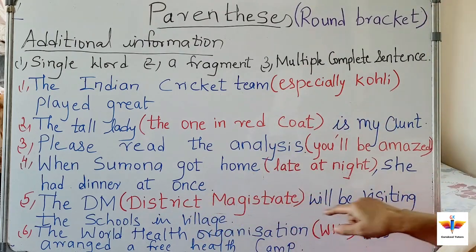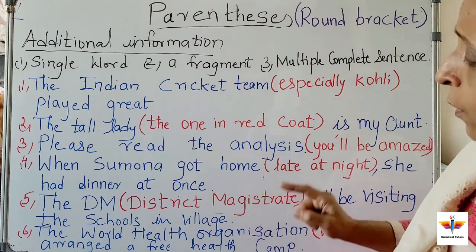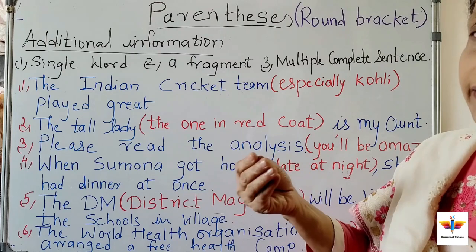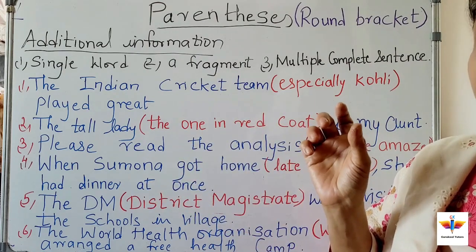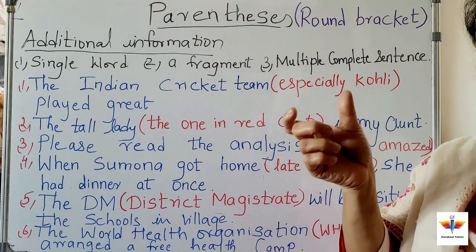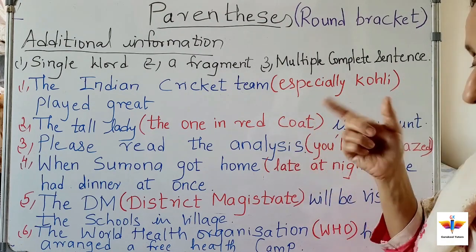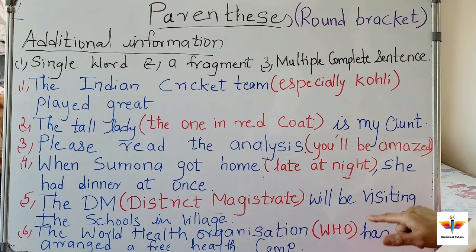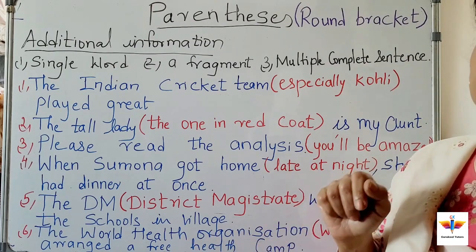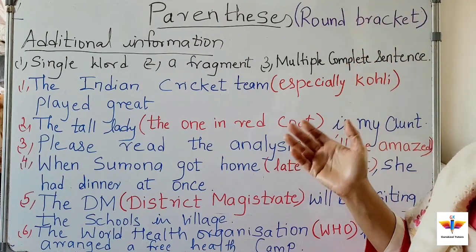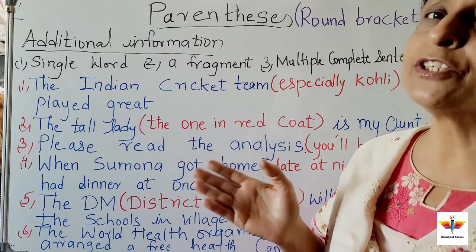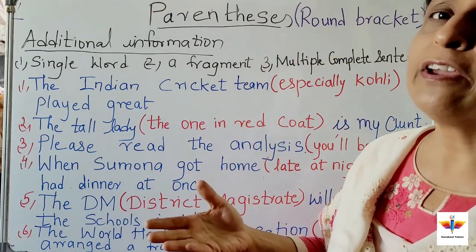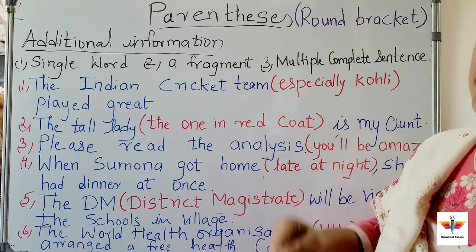Whenever an abbreviation becomes a word, it is known as an acronym. Like NASA is an acronym because it sounds like a word. WHO also becomes a word, so it is an acronym — the abbreviation becomes an acronym. For example: 'The World Health Organization (WHO) has arranged a free health camp.' This is how parenthesis is used — a round bracket giving extra information. What you want to convey can be conveyed through parenthesis, that is the round bracket.